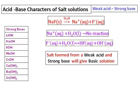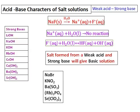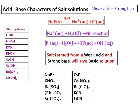To identify a weak acid/strong base salt, look at the cation: if it belongs to the strong base table, and look at the anion: if it does not belong to the strong acid table, then it will give a basic solution. The bottom line is you must remember the strong base and strong acid tables.